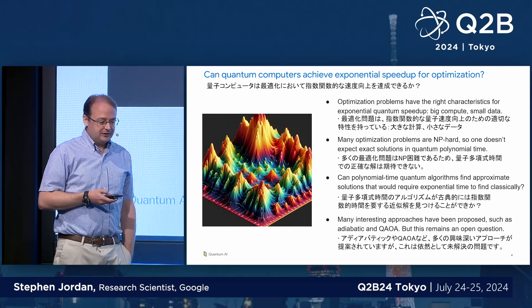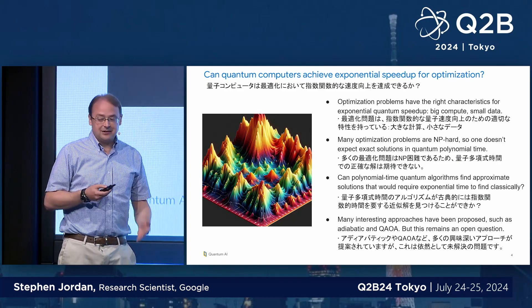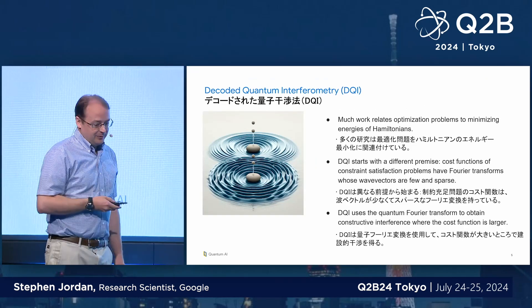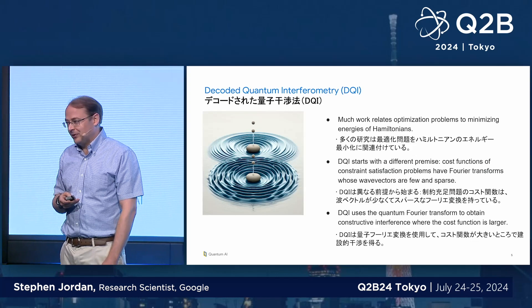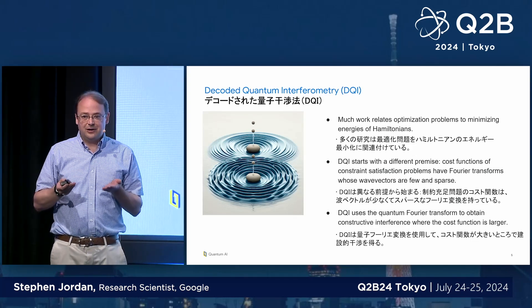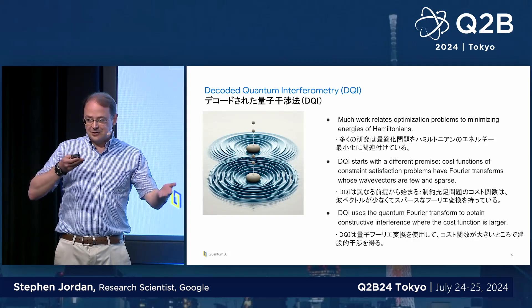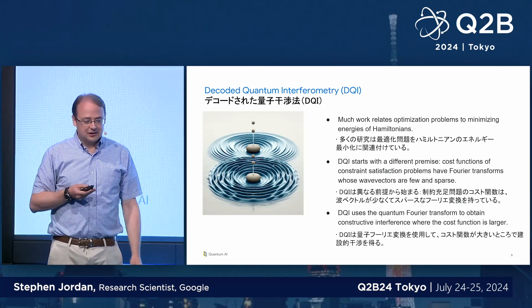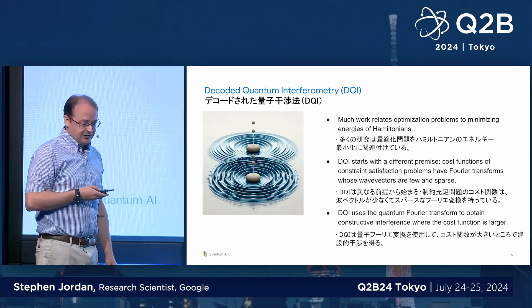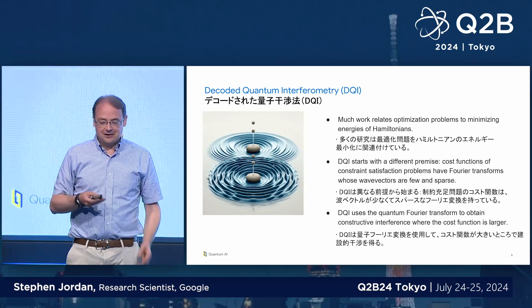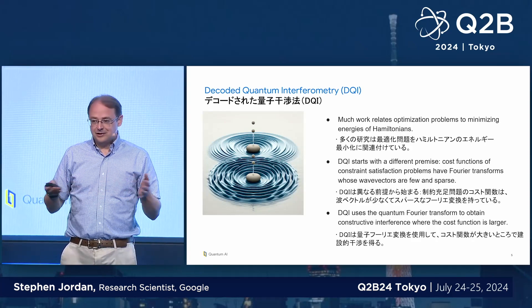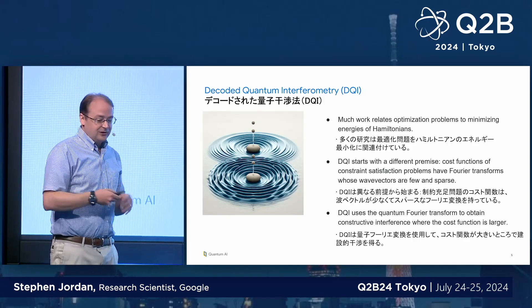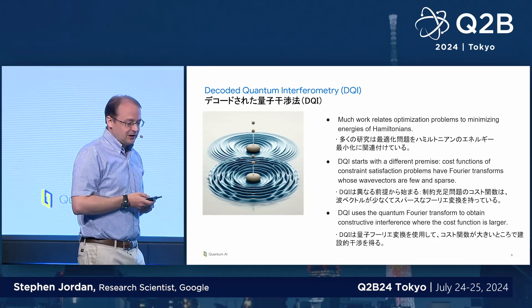Although there are many interesting results, I think it's fair to say that the basic question has so far not been resolved. A number of approaches have been proposed, such as adiabatic and QAOA methods, and those are based on using Hamiltonians as an analogy for cost functions. In our new approach, our point of connection is completely different. Instead of thinking about energy landscapes, we think about interference of waves, and we try to design our algorithm so that waves interfere constructively on the very good solutions and destructively on the suboptimal solutions.